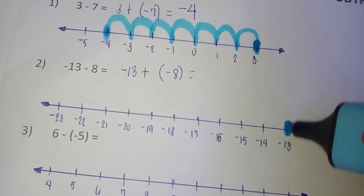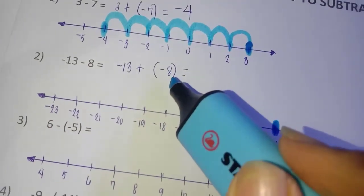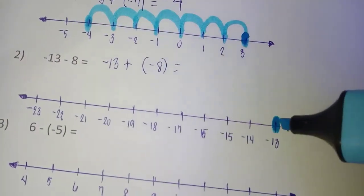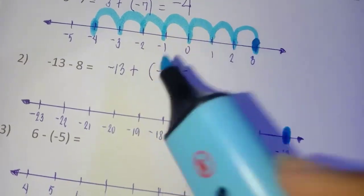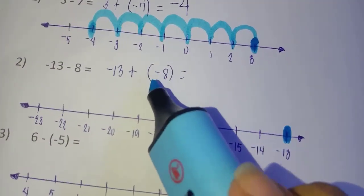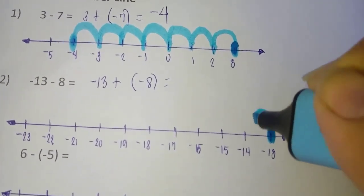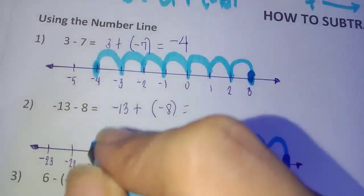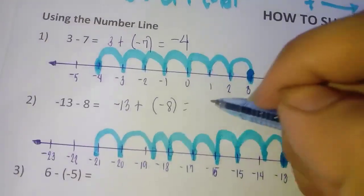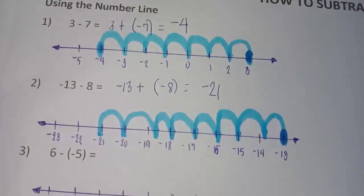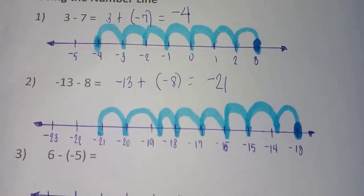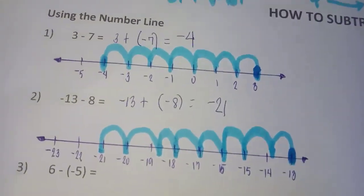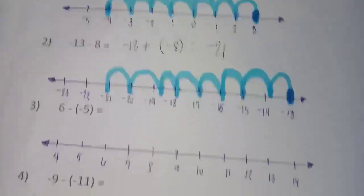Locate the first addend, negative 13, on the number line. The second addend is eight, which tells us the number of units to move. Since eight is negative, we move eight units to the left: one, two, three, four, five, six, seven, eight — the answer is negative 21. Hence, negative 13 minus eight equals negative 21.